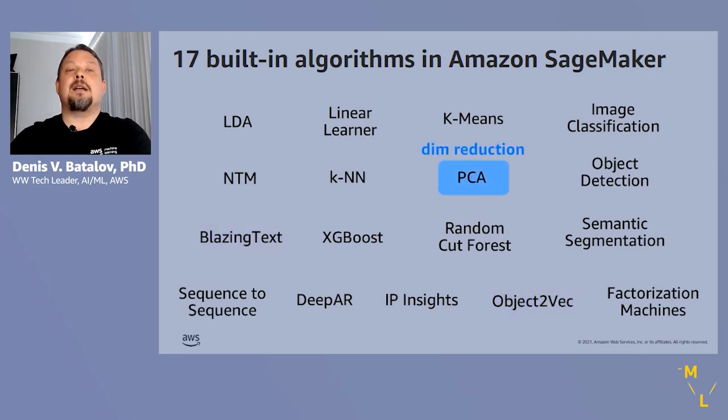Similar to embeddings, the Principal Component Analysis or PCA is a technique for dimensionality reduction of input data and is used as an initial step in data preparation. Since we've already moved on to unsupervised learning techniques, K-Means is a popular clustering algorithm designed to discover structure in data.